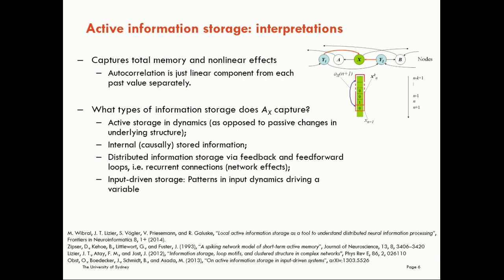It will also pick up what we call distributed information storage. So storage that is not mechanistically within the variable, but maybe leaving that variable and coming back into it later via feedback and feed-forward loops. That is, recurrent connections or network effects. The information could leave X, go to other variables and come back into X later via other connections in some kind of feedback or feed-forward loop. The AIS will capture both that and internally mechanistically stored information.